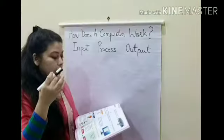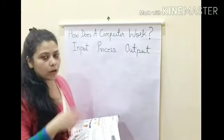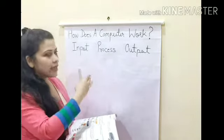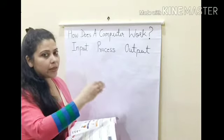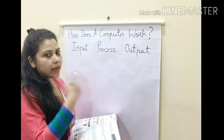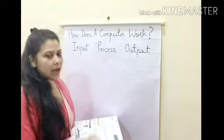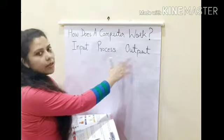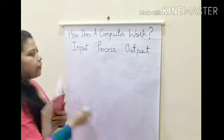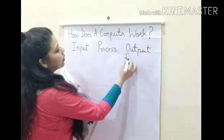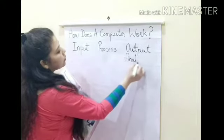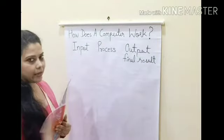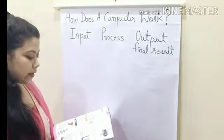The last one is output. We have entered all the data into the computer — that is called input. Now the processor, that is the CPU, starts doing its work and gives out the final result, and that is called output. Output means the final result.